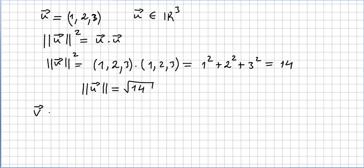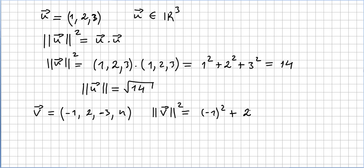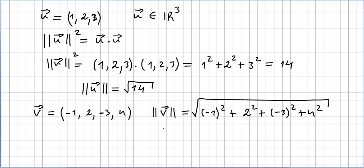If you have a vector in any other space, the idea will be the same. Let us say we have the vector minus 1, 2, minus 3, 4. This will be minus 1 squared plus 2 squared plus minus 3 squared plus 4 squared. You calculate all of this, and that will be the length or norm of vector v, where v is a vector in R4.